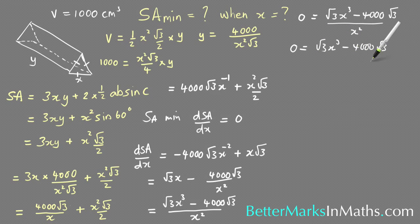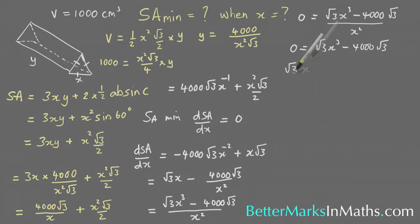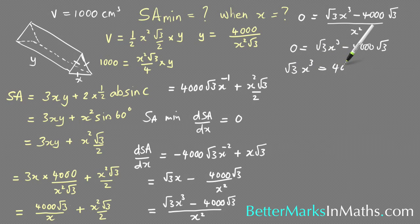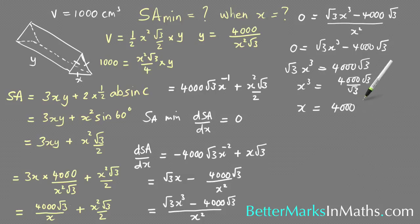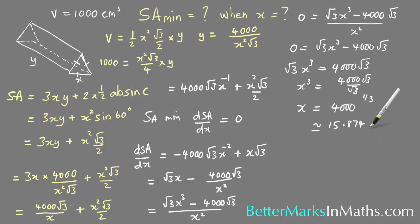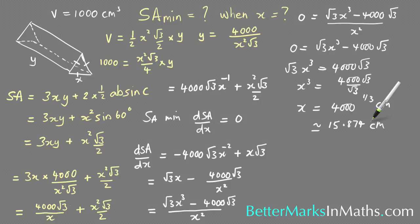Setting the numerator to zero: 0 equals root 3 x cubed minus 4000 root 3. Rearranging gives root 3 x cubed equals 4000 root 3, and the root 3 terms cancel, leaving x cubed equals 4000. Therefore x equals the cube root of 4000, or 4000 to the power of one-third, which is approximately 15.874 centimeters.